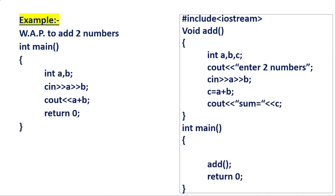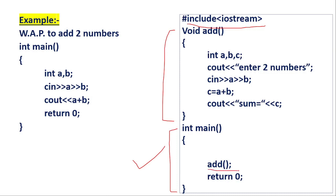How will you write this program? First, understand that in the first line I have written the header file. After that I have created a function body — this function body is a separate body compared to our main program. This is our main program, and the main program is calling the function. We have created the function body above the main function. In this function body I have given the name 'add'. We can change the name as per our requirement, but that particular word cannot be a predefined keyword.